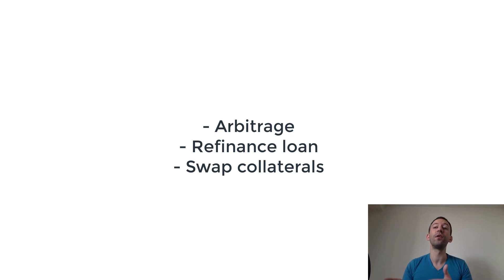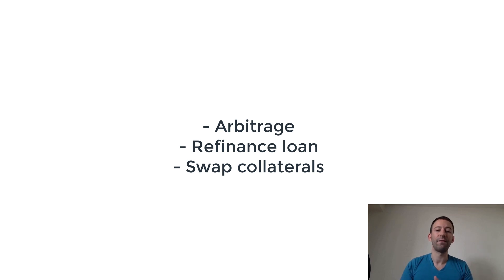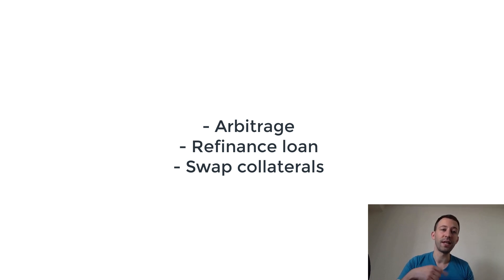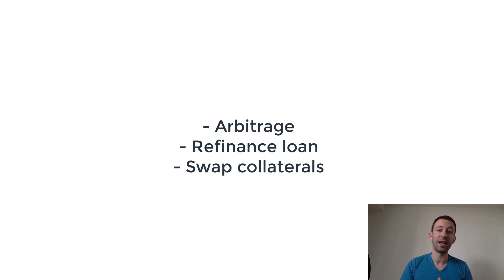So you've effectively moved from a loan at 10% to a loan at 5%. You can also swap the collateral of an existing loan. If you have a loan on Compound with token A as collateral but want token B instead, you take a Flash Loan for token B, send it to Compound as collateral, take out token A, use a decentralized exchange like Uniswap to swap token A into token B, then reimburse your Flash Loan.